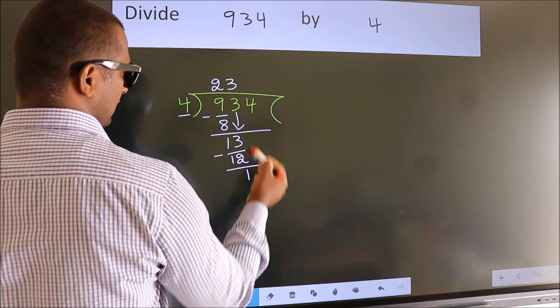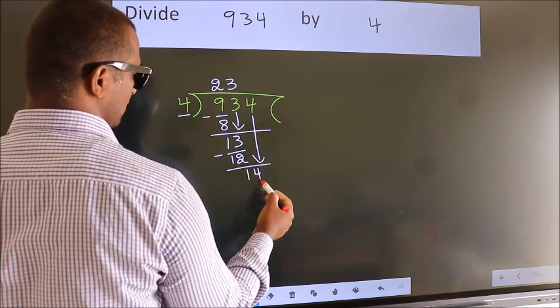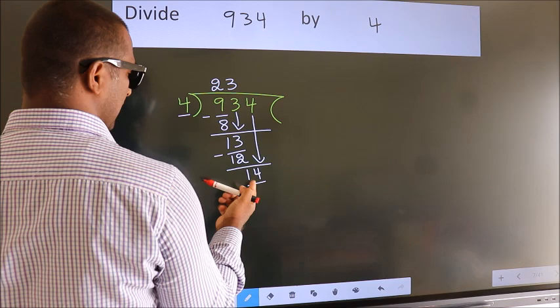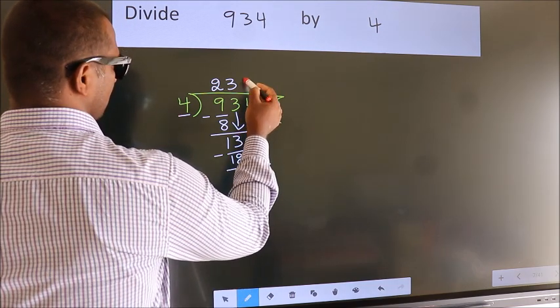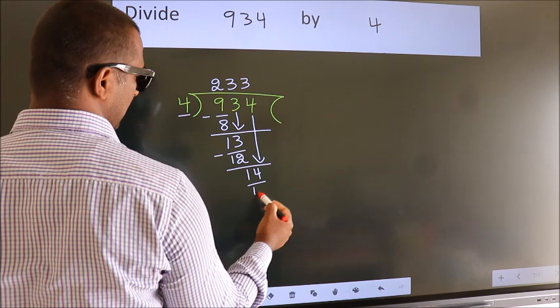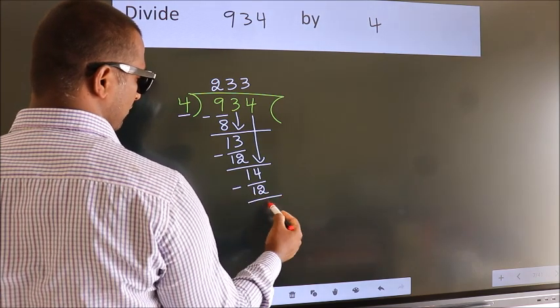After this, bring down the beside number. So 4 down, so 14. A number close to 14 in 4 table is 4 3s 12. Now we subtract. We get 2.